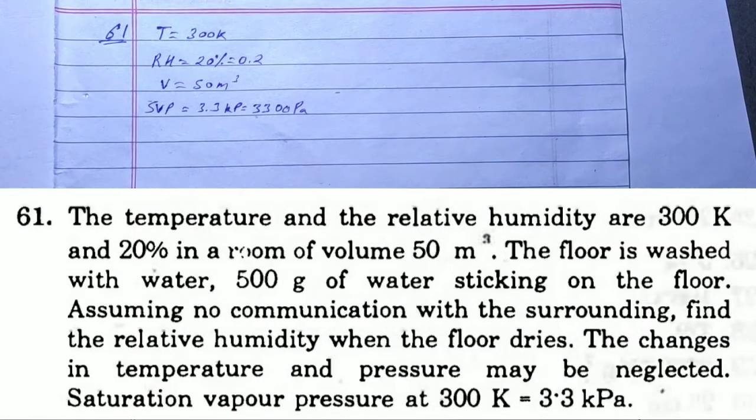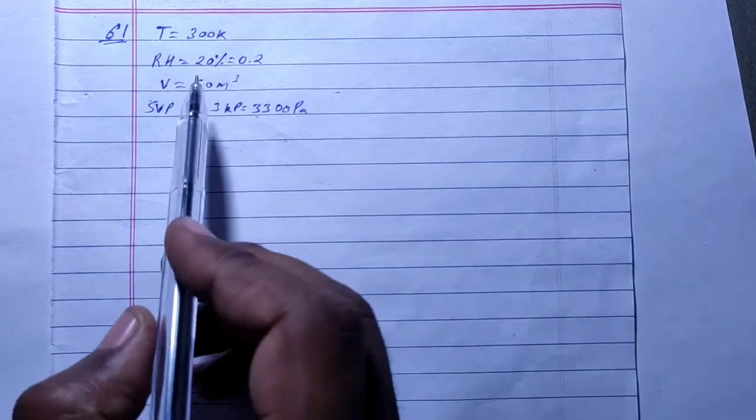The temperature and relative humidity are 300 Kelvin and 20% in a room of volume 50 meter cube. The floor is washed with water, 500 grams of water sticking on the floor. Assuming no communication with the surrounding, find the relative humidity when the floor dries. The change in temperature and pressure may be neglected. Saturation vapor pressure at 300 Kelvin is equal to 3.3 kilopascal.